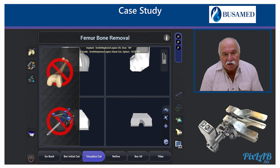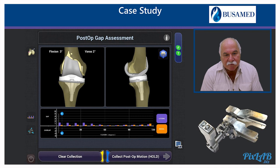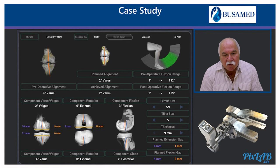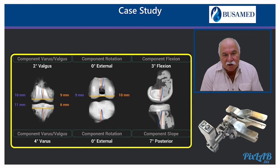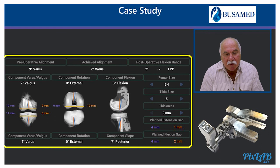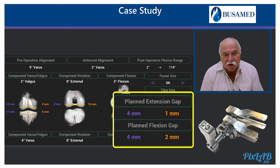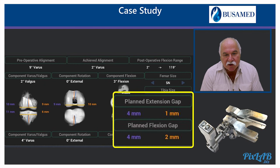We start cutting the femur — robotics in action. Post-operatively, we assess our post-operative gap and see it is not too tight. This is what we achieved: we started with 9 degrees of varus and achieved 2 degrees of varus post-operatively. Numbers are matching — external rotation of the femur at zero as expected, tibia component at 4 degrees varus, gap balanced with 4 mm on the lateral side in flexion and extension, and 1 mm and 2 mm respectively in extension and flexion on the medial side.